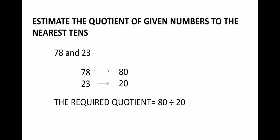Thus the required quotient is equal to 80 divided by 20. And again here if you just cancel the zeros, it will be 8 divided by 2. And 8 divided by 2, the answer is equal to 4. So 4 is the estimated quotient nearest to the nearest tens of the given numbers.